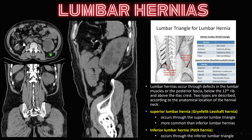Next, lumbar hernias. Here you can see herniation of fat through the superior lumbar triangle — this is superior lumbar hernia, also called Grynfeltt-Lesshaft hernia. The other hernia is inferior lumbar hernia, where fat or intra-abdominal contents herniate through the inferior lumbar triangle, called Petit hernia. Pause the slide and see the boundaries of the superior lumbar triangle (Grynfeltt-Lesshaft hernia) and inferior lumbar triangle (Petit hernia).